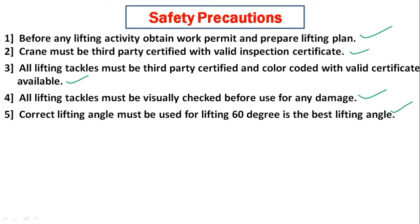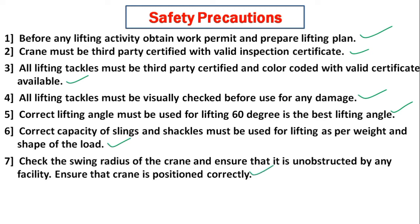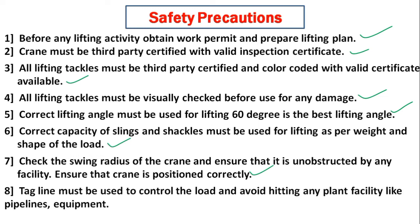The correct lifting angle must be used — 60 degrees is the best lifting angle. Correct capacity of slings and shackles must be used for lifting as per the weight and shape of the load. Check the swing radius of the crane and ensure it is unobstructed by any facility. Ensure that the crane is positioned correctly.